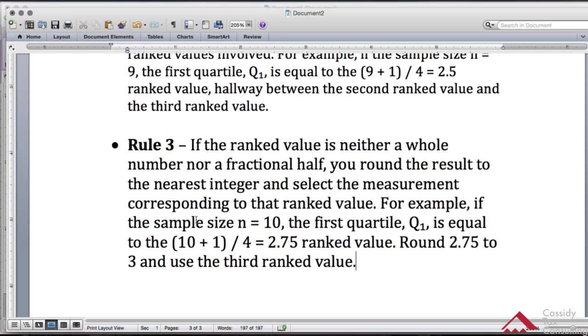For example, like we just saw, if the sample size is 10, which is our sample size, the first quartile Q1 equals (10+1) divided by 4, which came out to 2.75. The rank value 2.75 is close to 3, so you round it off to 3 and use the third ranked value.